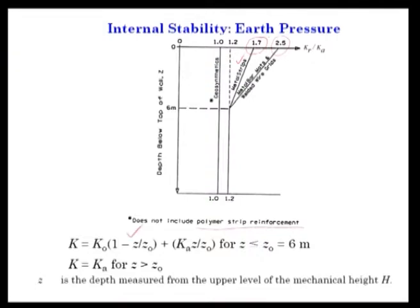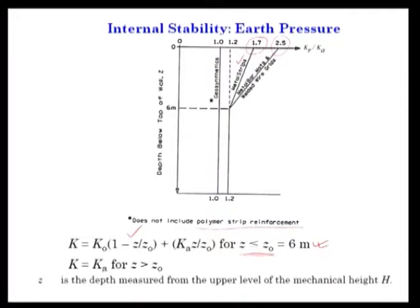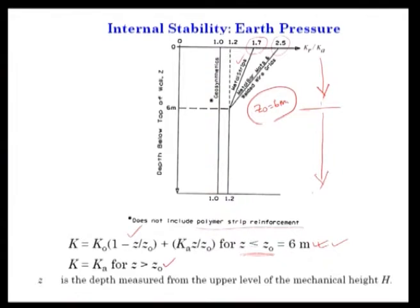The earth pressure coefficient K equals K0·(1 - Z/Z0) + Ka·(Z/Z0) for Z ≤ Z0, where Z0 is taken as 6 meters. For a wall height up to 6 meters, this variation can be found from these equations. Beyond 6 meters, K equals Ka for Z greater than Z0. Here Z is the depth measured from the upper level of the mechanical height H.